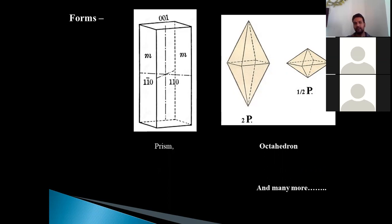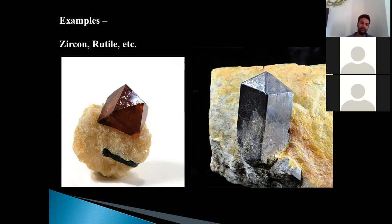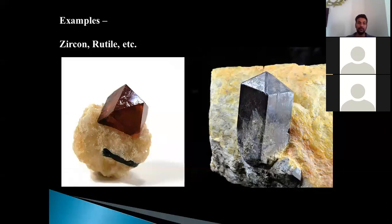You should be able to derive the crystal notations for these forms. The examples of the tetragonal system are zircon, rutile, etc. You can see beautiful crystals of these minerals — the red one is zircon and the gray or metallic one is rutile. You can see how perfect and beautiful crystals can be in nature. They are referred to as the tetragonal normal class. Zircon shows the maximum properties of the tetragonal system and is therefore referred to as the normal class of the tetragonal system.